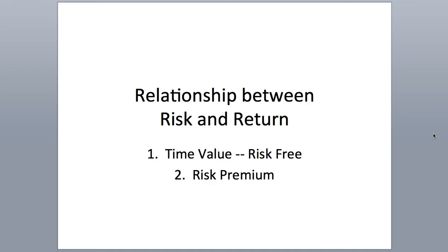The general idea of the Capital Asset Pricing Model is that investors need to be compensated in two ways: for time-value of money and for risk. The time-value of money is represented by the risk-free rate — the rate when there is no risk in the market, something like a short-term US treasury. The risk premium represents the premium of that asset over the market.